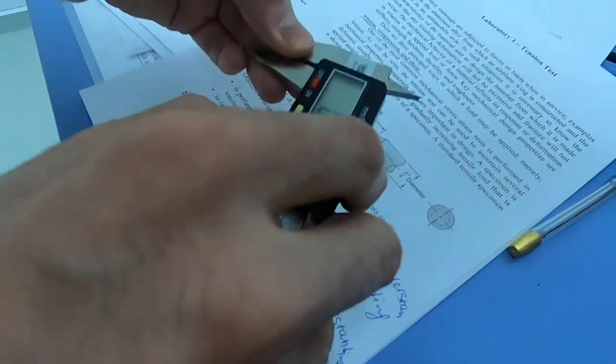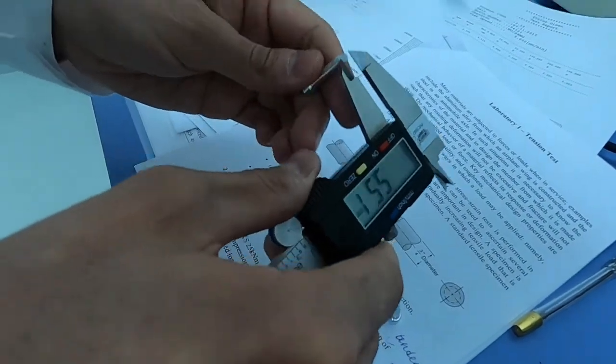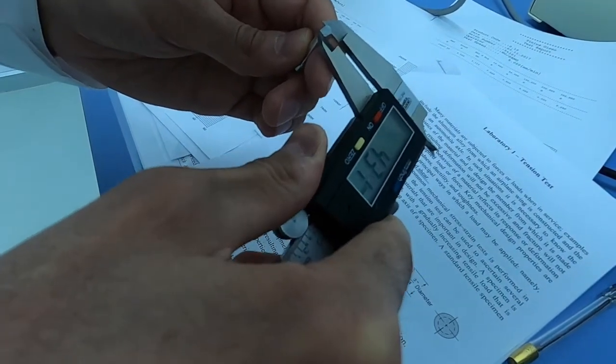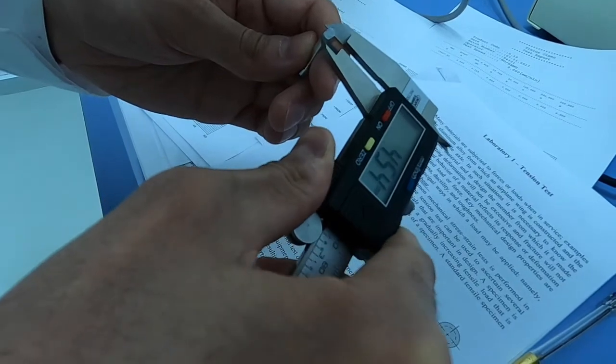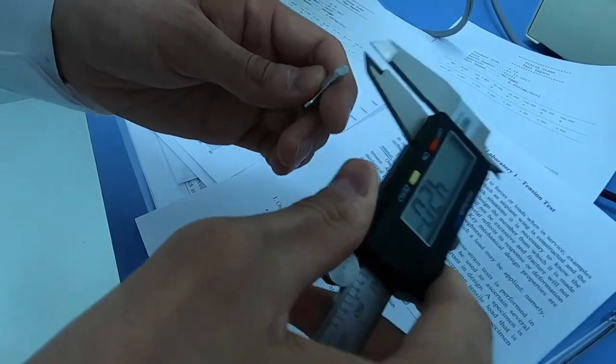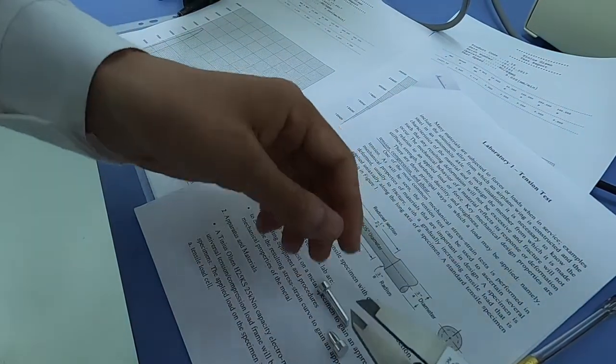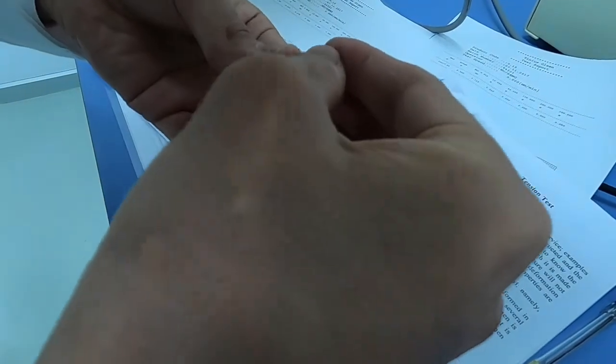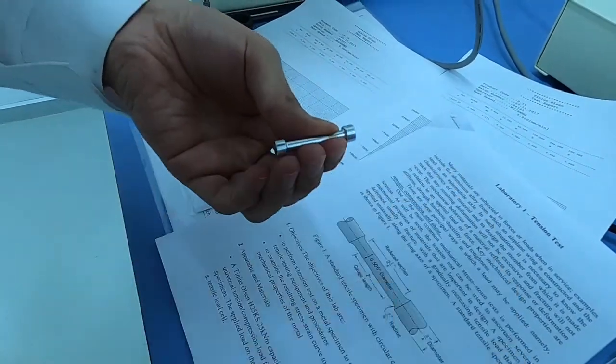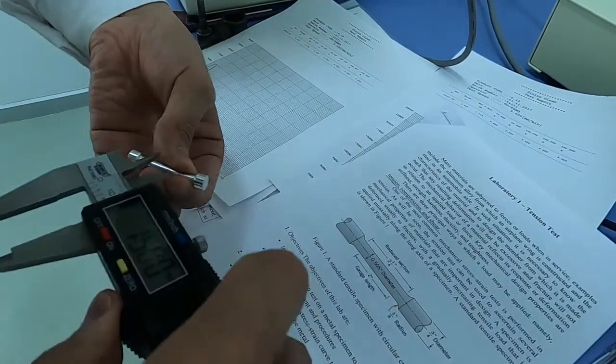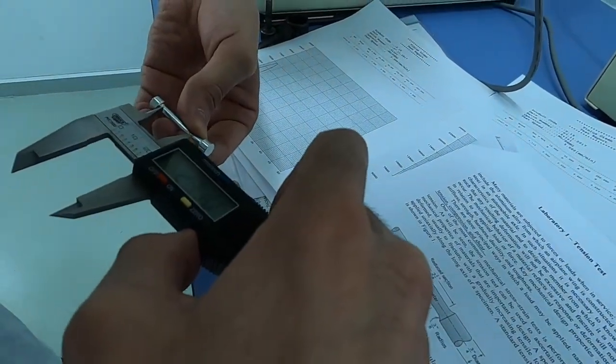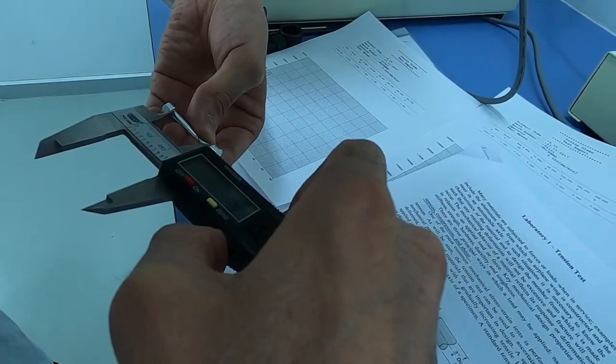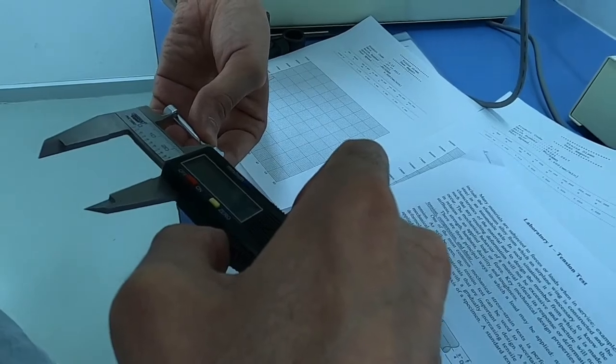Like this. This is our fracture diameter, and here is our gauge length. That's it.